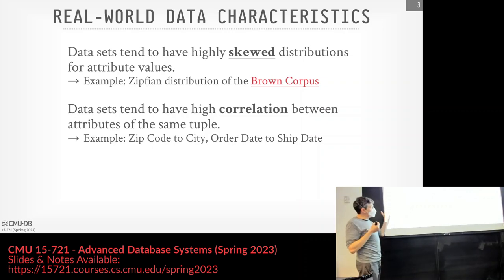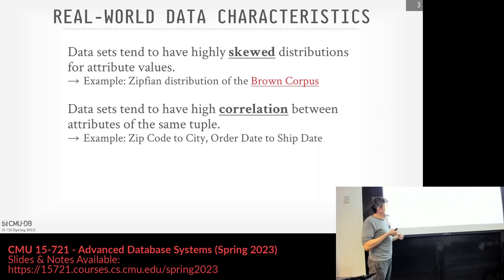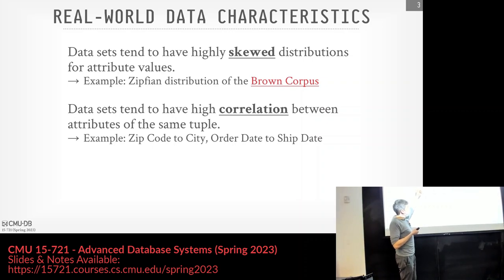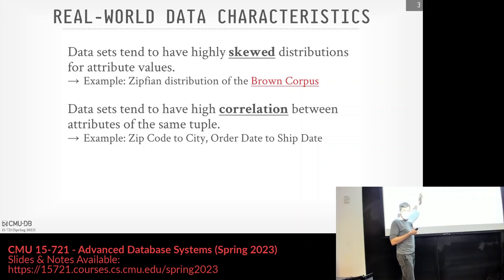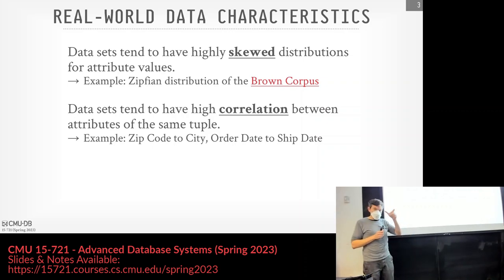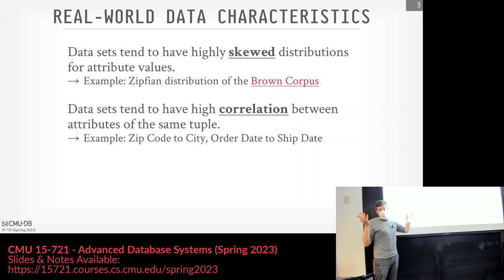There are two basic ideas we can exploit. First, data sets are going to be highly skewed — meaning we're going to see the same values over and over again in our columns, and that's a ripe target for compression. The classic example is the Brown Corpus. In the 1960s at Brown University, researchers looked at the entire collection of literature in the English language — Shakespeare and similar works — and literally counted the occurrence of each word. The most common word was 'the.'